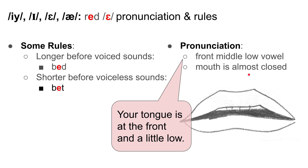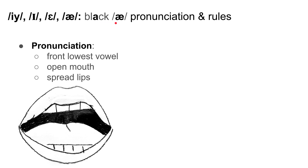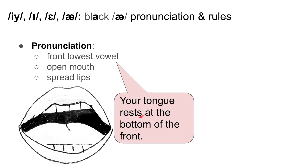Then we have E as in 'black.' These are some pronunciation rules: it's the front lowest vowel, so your tongue rests at the bottom of the front of your mouth. We say it with an open mouth, so we can get that tongue nice and low, and with spread lips — E as in 'black.'